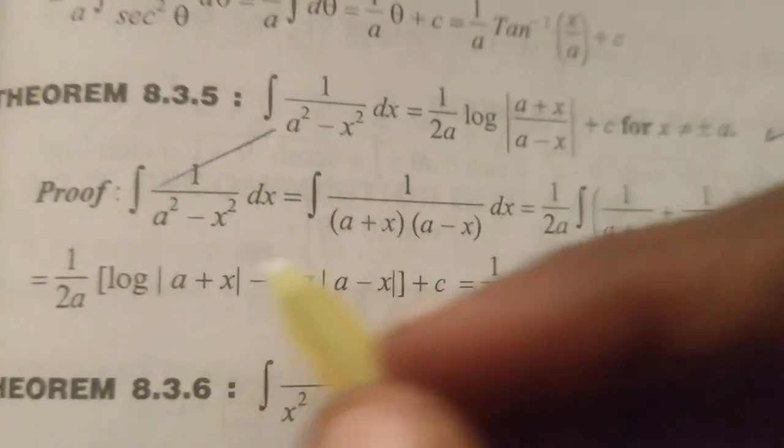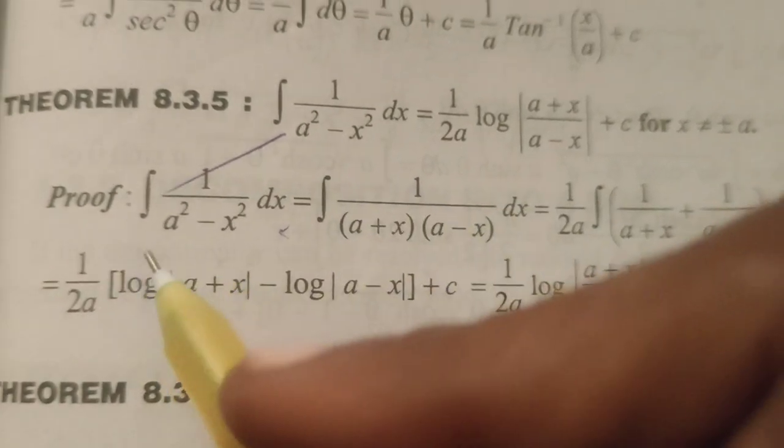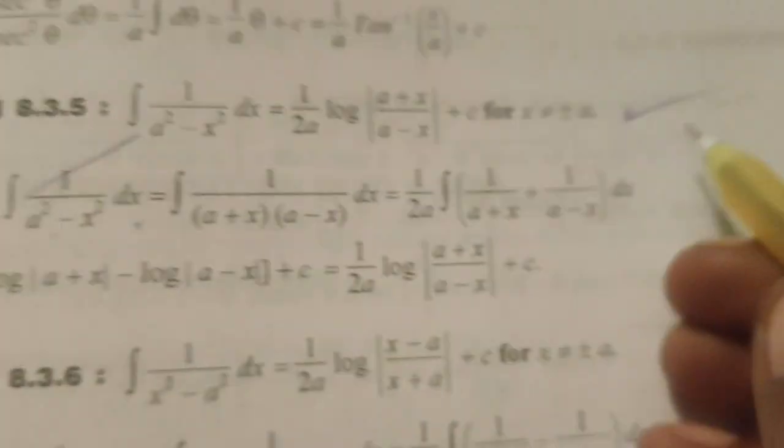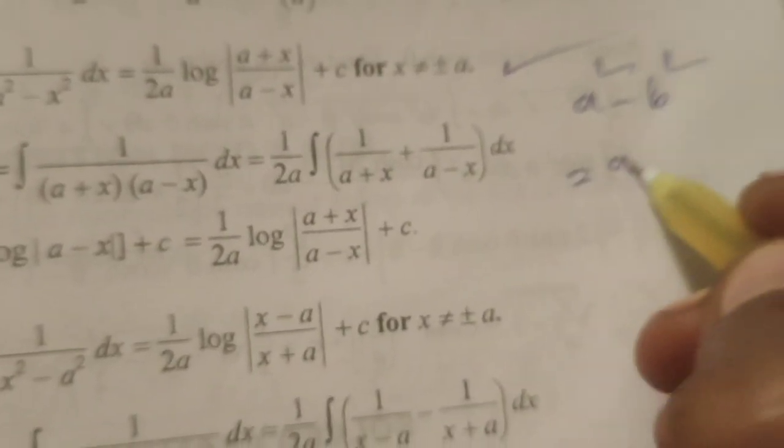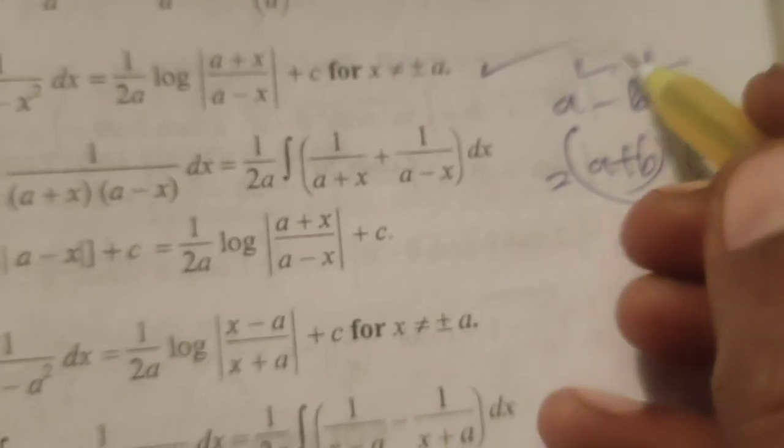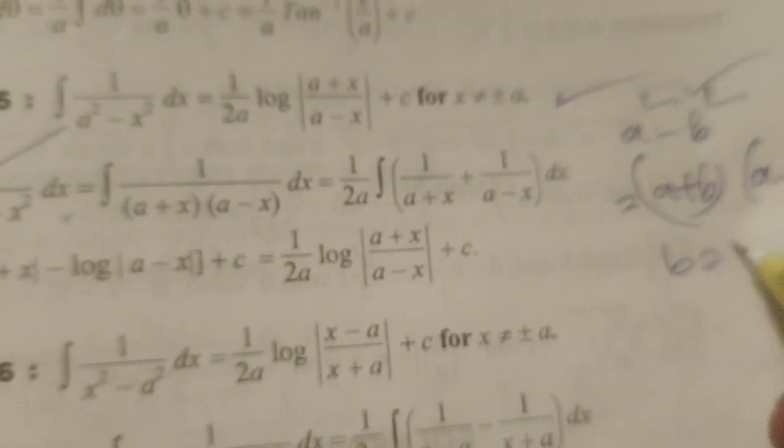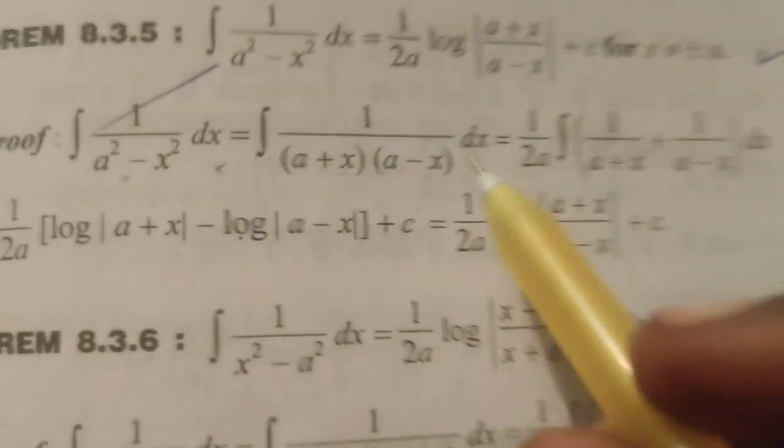First of all, write the given integral. Now here integral of a square minus x square, using formula a square minus b square, that is a plus b into a minus b. Here in place of b, x is there. Using the same formula, here a plus x into a minus x dx.